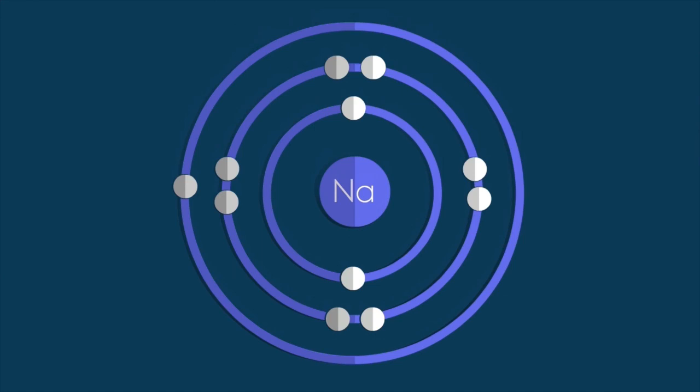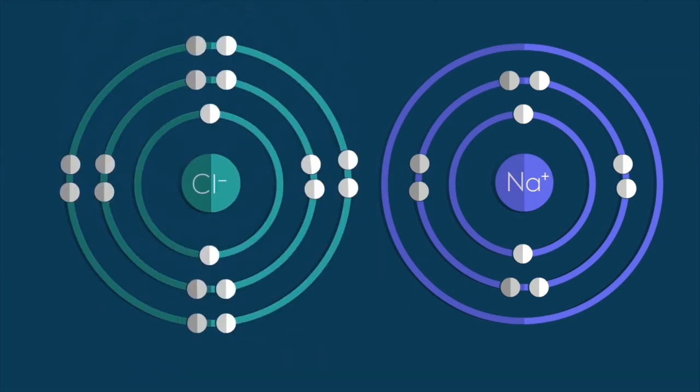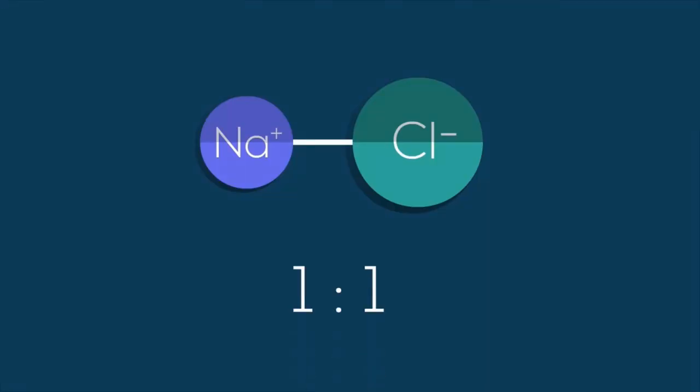Look at sodium. It has one electron in its outer shell, which it loses to form sodium plus. It then forms ionic compounds to neutralize charge. So if it meets a chlorine minus, they form sodium chloride at a one-to-one ratio.